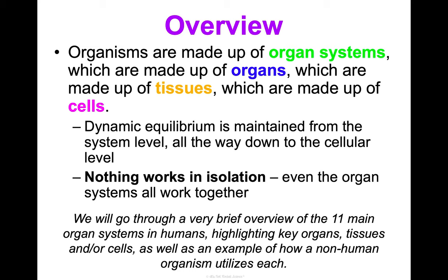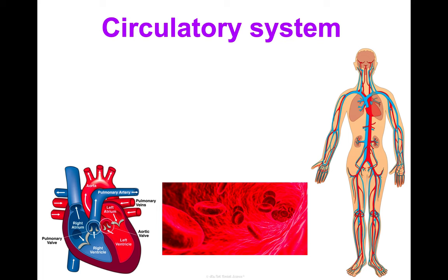It's easy to forget that other living things are really complex too and have organ systems as well. You may have heard there are 12 organ systems in humans — different sources say 11 or 12. The 12th is the lymphatic system, which I'm not going to cover in detail, and I'll explain why at the end of the notes.